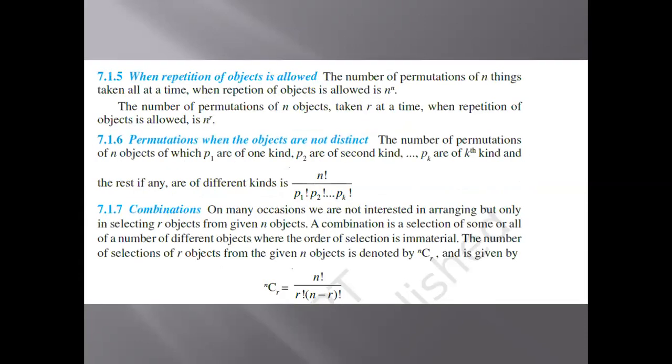When repetition of objects is allowed, the number of permutations of n different things taken r at a time will be equal to n to the power r.